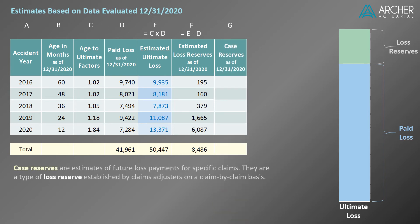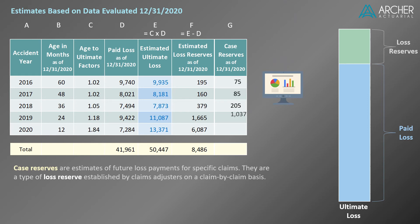Next, let's include case reserves in our exhibit. Case reserves are estimates of future loss payments for specific claims. They are a type of loss reserve established by claims adjusters on a claim-by-claim basis. We need to refer to the original source data underlying our analysis to populate the case reserves in our table. Typically these amounts are provided to actuaries as part of a loss reserve analysis.